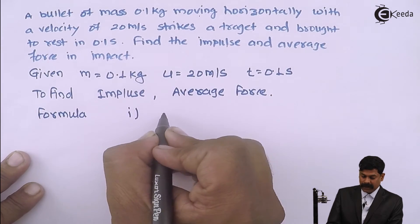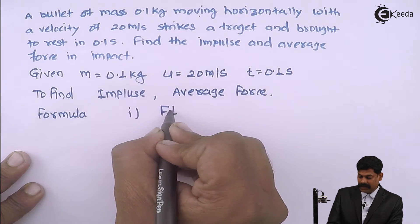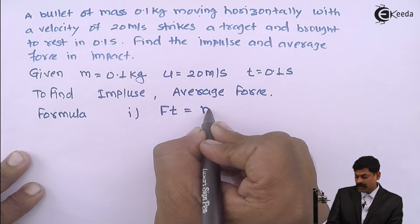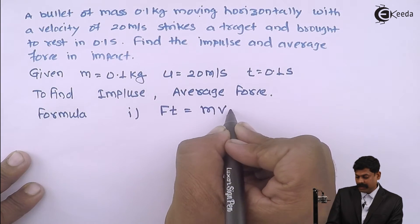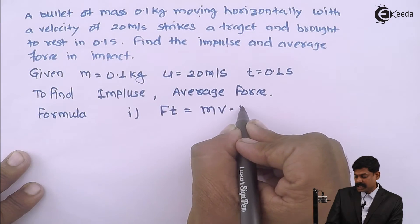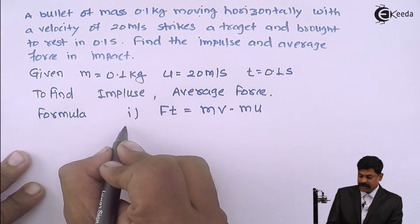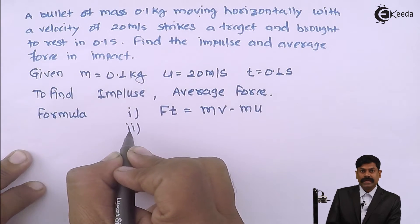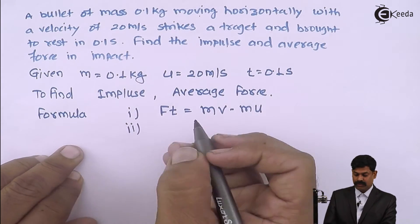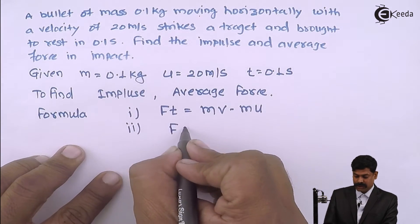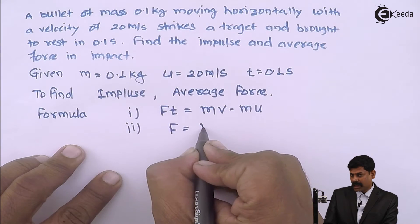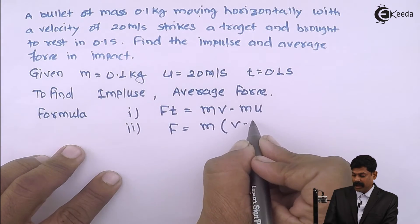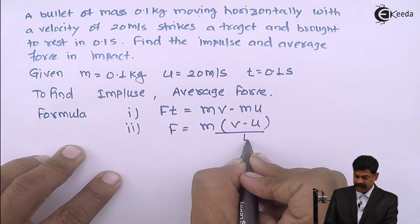To calculate impulse we will use Ft equals mv minus mu. To calculate average force we will use F equals m times (v minus u) divided by t.